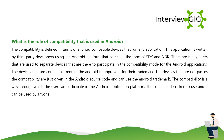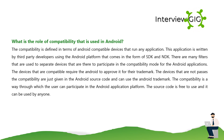What is the role of compatibility in Android? Compatibility is defined in terms of Android-compatible devices that run applications written by third-party developers using the Android SDK and NDK. Devices that are compatible require Android approval for their trademark. Devices that do not pass compatibility are given the Android source code but cannot use the Android trademark. Compatibility is the way through which users participate in the Android application platform.